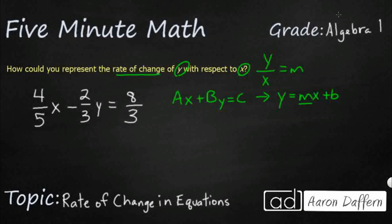Let's solve for y. Because when we solve for y, we will find our slope. So let's subtract 4 fifths x from both sides. All right, that's going to get me my, that's going to get rid of that.